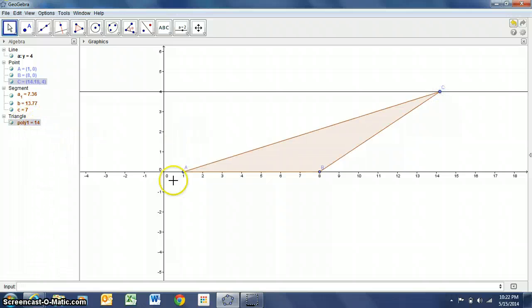And the reason that area stays 14 is because the length across the bottom here is still going to be seven and the height, even though we have now a triangle that's slanted way over to one side, the height of it still measured perpendicular, so that height is still going to be four. And I can take point c and I can move it all the way over to the right, I can drag it back to the middle, I can take it all the way over to the left.